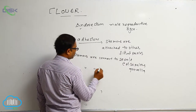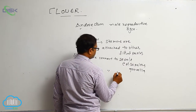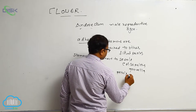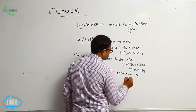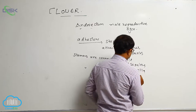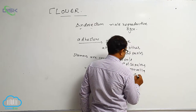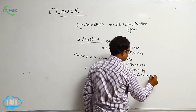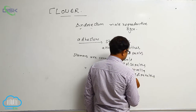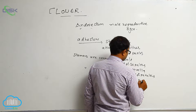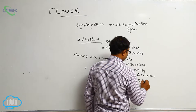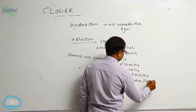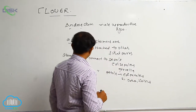Next, stamens are connected to petals, so that is known as the Epipetalous condition. Example: Datura and Hibiscus.